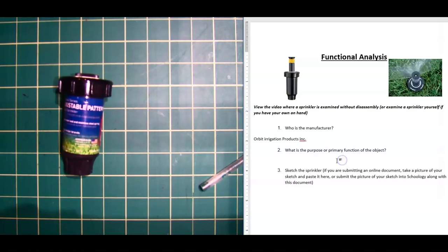And what is the primary function of this object? And hopefully you can answer that question on your own. It's a sprinkler. Hopefully you know what a sprinkler does. And the next question asks you to sketch the sprinkler yourself. Then it says if you're submitting an online document, take a picture of your sketch and paste it here. Or you could just submit the picture via Schoology on your own if you'd prefer.